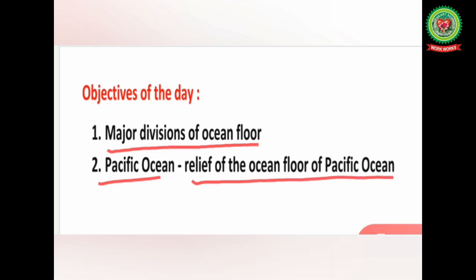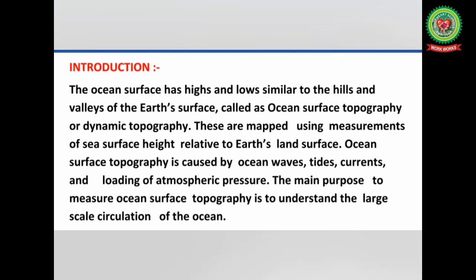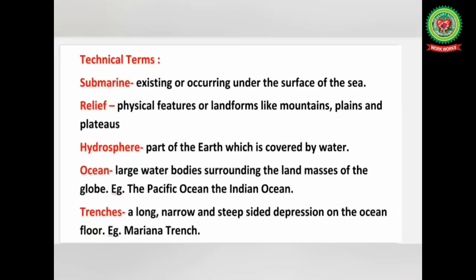The ocean surface has highs and lows similar to the hills and valleys of the earth's surface, called ocean surface topography or dynamic topography, as they are ever-changing. These are mapped using measurements of sea surface height relative to the earth's surface. Ocean surface topography is caused by ocean waves, tides, currents, and loading of atmospheric pressure.